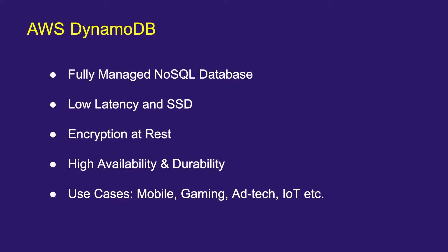Encryption at rest is also offered, and your data is replicated across multiple availability zones in an AWS region. If you lose your data due to corruption or disaster, you'll be able to recover it. AWS takes care of replication, high availability, and durability. Use cases include mobile applications, mobile gaming, ad tech, and IoT applications.